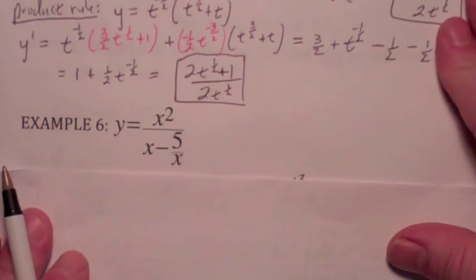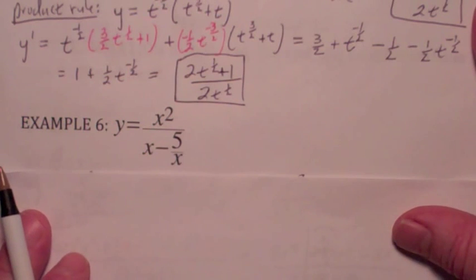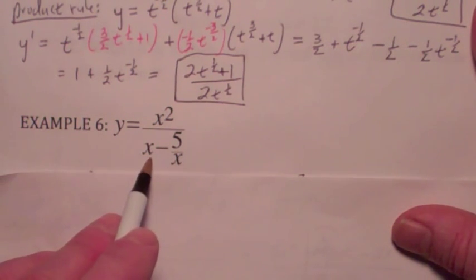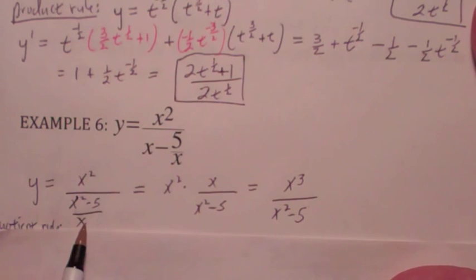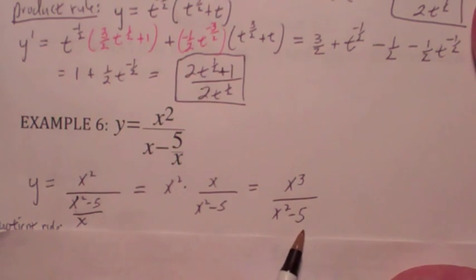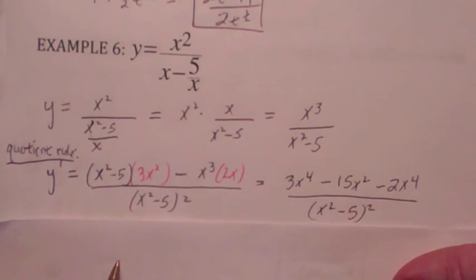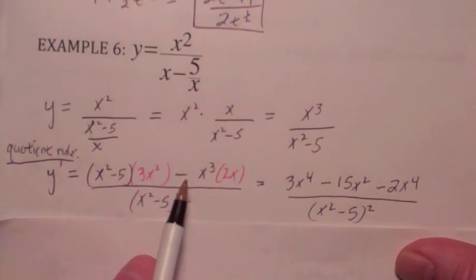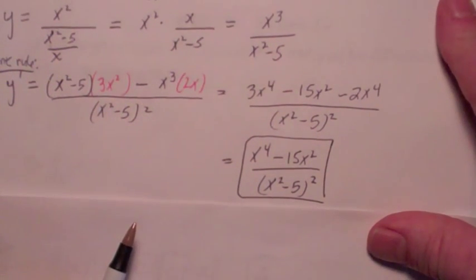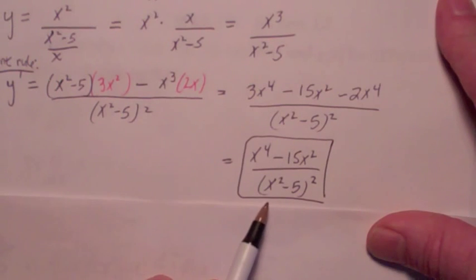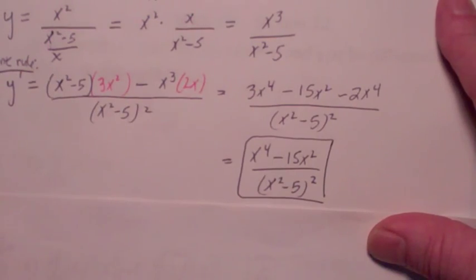Last one. This last problem illustrates that sometimes it's nice to simplify before you differentiate. If you simplify the denominator, get the LCD, you get x squared minus 5 over x, then flip and multiply. The function can be written as x to the third over x squared minus 5. Using the quotient rule: bottom times derivative of the top, minus top times derivative of the bottom, all over the bottom squared. Multiply the top out and combine like terms — the final answer is x to the fourth minus 15x squared, all over (x squared minus 5) squared. That just about wraps it up for today. See you in class.